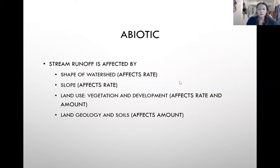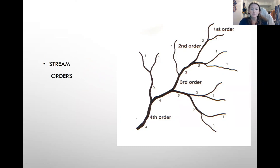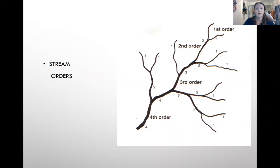Stream orders can get tricky — I would practice them, do some drawings, and take a map and figure out what the stream orders are. Like-ordered streams combine and move up only one level: one plus one equals two, and three plus three equals four. However, unlike-ordered streams combine and remain at the higher order level: a two plus a one equals two. This graphic is really helpful to practice with — erase the numbers and practice on your own, maybe quiz each other.